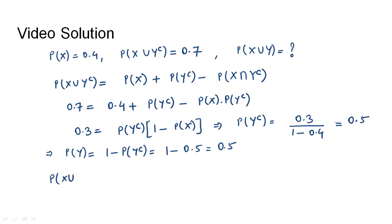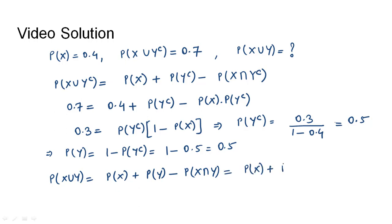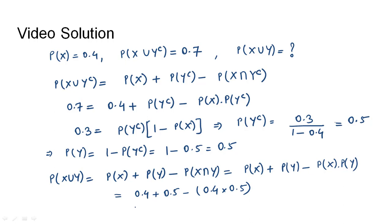Now we find P(X∪Y) = P(X) + P(Y) - P(X∩Y). Since X and Y are independent events, P(X∩Y) = P(X)·P(Y). This becomes 0.4 + 0.5 - (0.4 × 0.5) = 0.9 - 0.2 = 0.7.